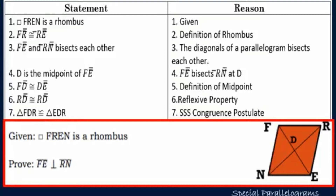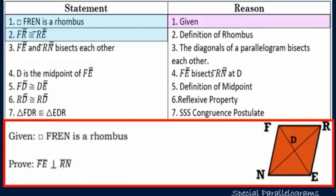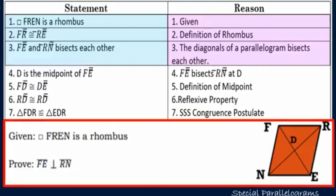Statement one: parallelogram FRIEND is a rhombus — this is given. Statement two: line segment FR is congruent to line segment RE — by the definition of a rhombus, since all sides are equal. Statement three: line segments FE and RN bisect each other — from the property that the diagonals of a parallelogram bisect each other.